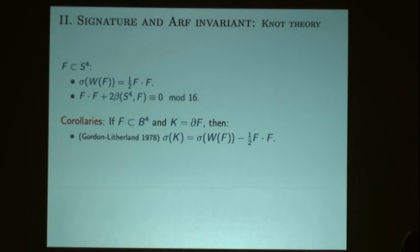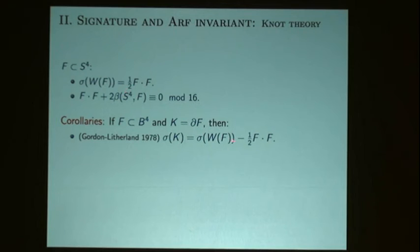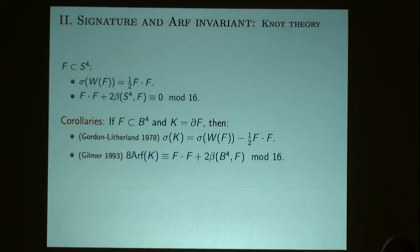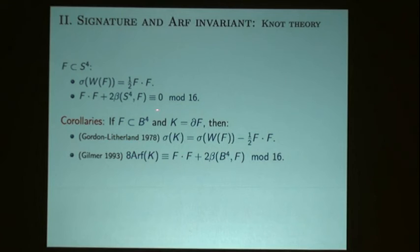So there are those two results. Gordon and Litherland used the first result to show that the signature of a knot can be computed using branch covers of non-orientable manifolds. Once you have this, it's not hard to show it's a well-defined knot invariant, and you check that using an orientable surface gives the standard signature. The other result was Pat's observation that the Arf invariant of the knot can also be determined using non-orientable surfaces in the four-ball.